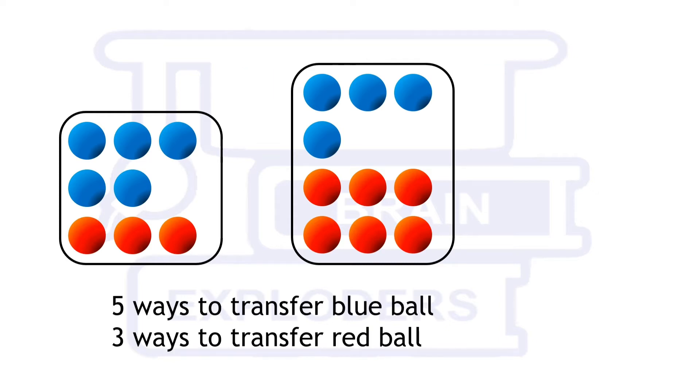Here all the balls have equal chances of one in eight of getting transferred. In total there are eight balls in which five are blue so there are five ways to transfer blue ball and three ways to transfer red ball.